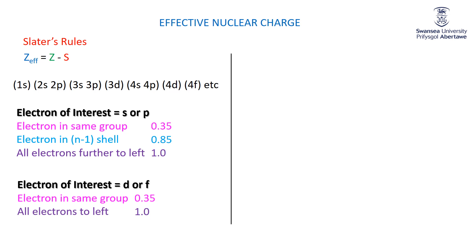As our last example, let's address removing electrons to make cations. For atoms where electrons are in S or P, the last electron in is the first electron out. But for transition metals it's different — as you put electrons in, they go into the D subshell, yet as you remove them, you first remove from the S because that is in a higher, further-out shell. Let's see if Slater's rules can explain that.